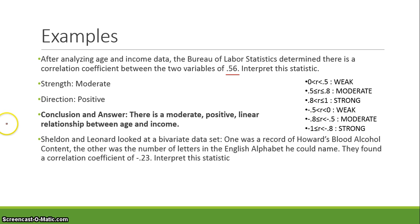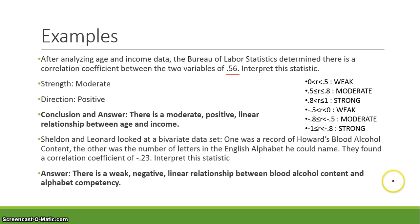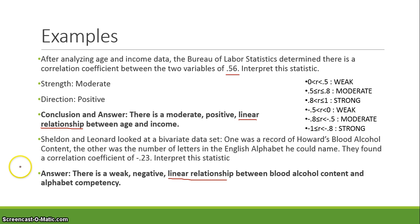Let's try another example. Sheldon and Leonard looked at a bivariate data set — one variable was Howard's blood alcohol content, the other was the number of letters of the English alphabet he could name. They found a correlation coefficient of negative 0.23. Since negative 0.23 falls between negative 0.5 and 0, the relationship is weak. It's negative because of the negative sign. You must state that it's a linear relationship — if you leave that out, you won't get credit. The answer: there is a weak, negative, linear relationship between blood alcohol content and alphabet competency.